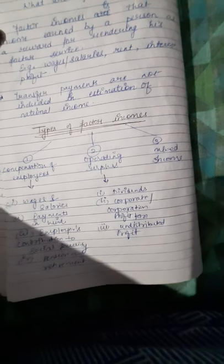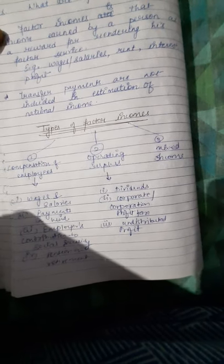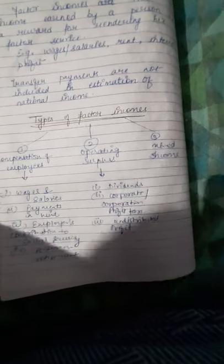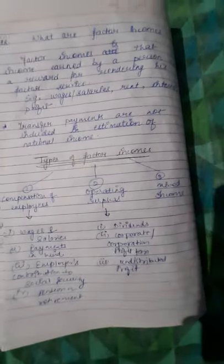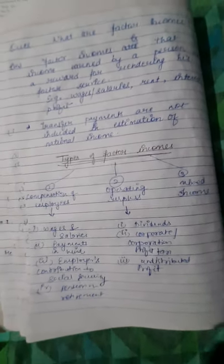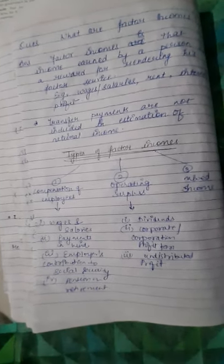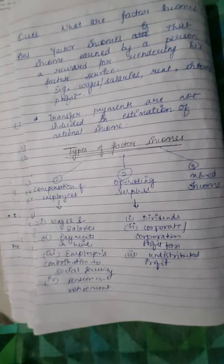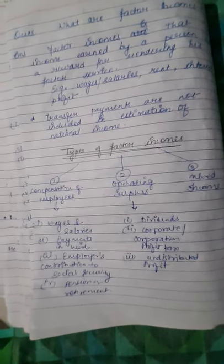Operating Surplus is used in the Income Method to calculate National Income. Operating Surplus equals dividend plus corporation profit tax plus undistributed profit. You need to add these components together to get the total operating surplus.